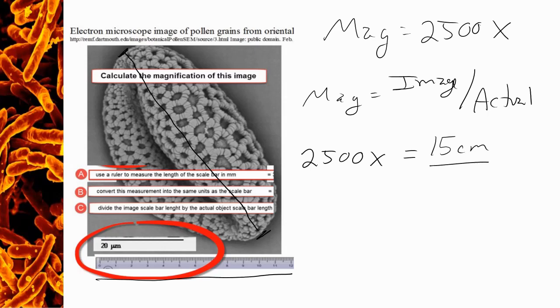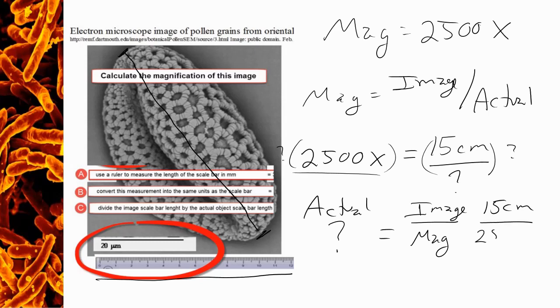And so we'll just estimate this and say that the image size is 15 centimeters. And we're trying to solve for the actual size. We're going to need to rearrange the equation. So we would multiply both sides by the value and then divide by our magnification. And what we'll end up with is an equation that looks like the actual size is going to equal the image size, which is 15 centimeters, over the magnification, which was 2,500.